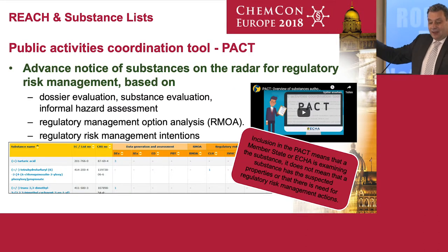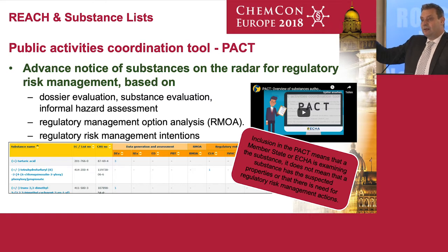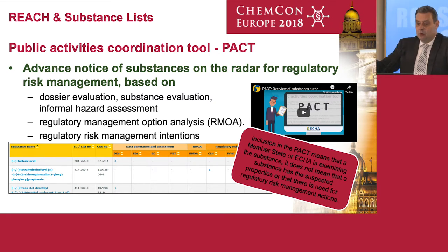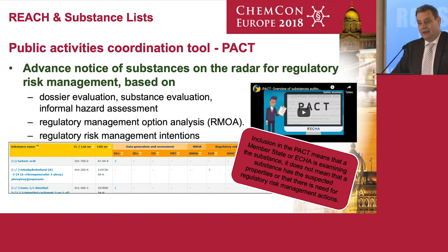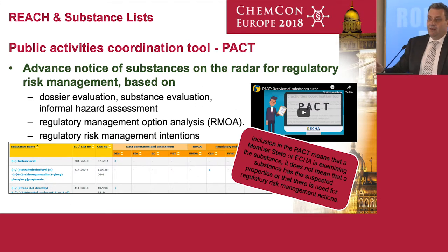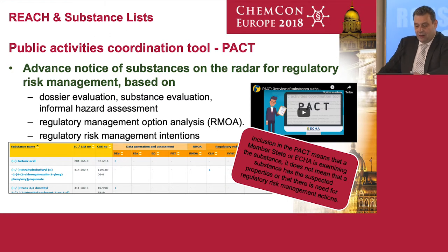At the beginning, the PACT list was more or less an advanced notice of substances on the radar for regulatory risk management, based on the screening exercise for PBTs, for endocrine disruptors, and at the beginning also for CMRs and so on. Now this PACT list — and we heard that yesterday — also includes substance evaluation. It also includes all the registry of intentions and the regulatory management option analysis. You can see from the very start whether for a certain substance on that list a management option or process has been started or finalized.